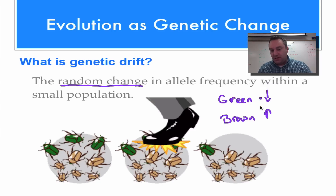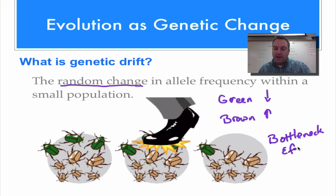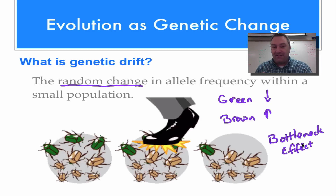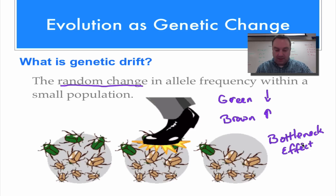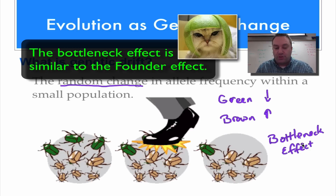The fact that the green alleles have decreased so much is also an example of what is called the bottleneck effect. The bottleneck effect happens after some very drastic event — in this case, just out of random, almost a third of the population died. This could happen from a hurricane, an earthquake, or a very bad snowfall, where a huge portion of the population dies.